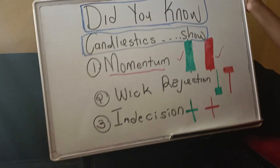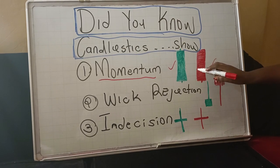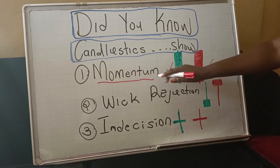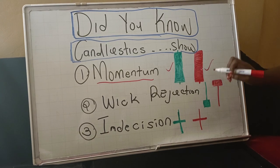What's happening in my book? These big volume candles, these are momentum. And the momentum can be either the buyer side or the sell side.